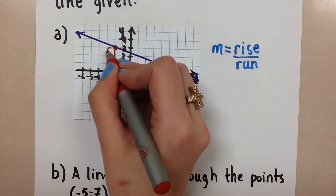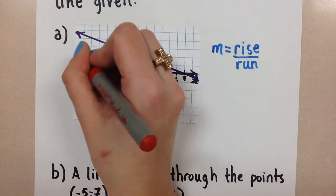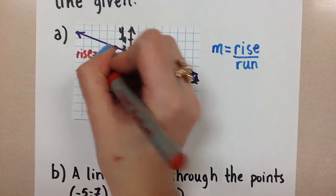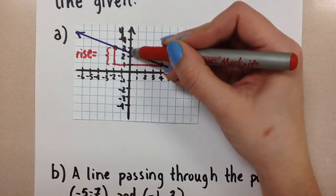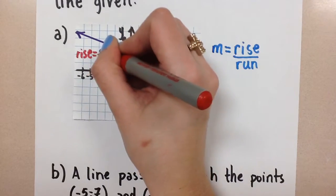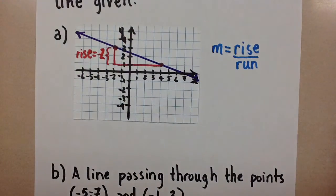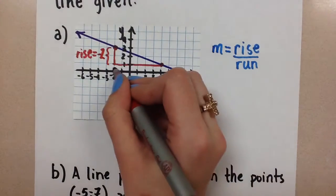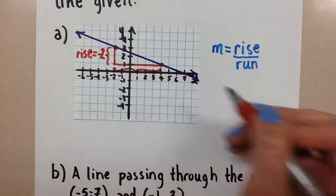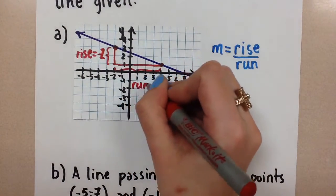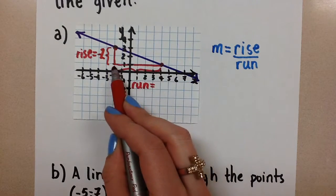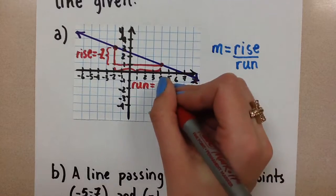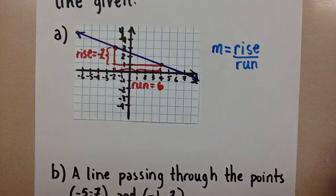So this rise value here, if I look at my scale, it's going from 3 to 1 and it's going down. So that's negative 2 for the rise. And then the run, that's this value right here, is going from negative 2 to 4. So that's 6 for the run because it's going to the right, positive 6.